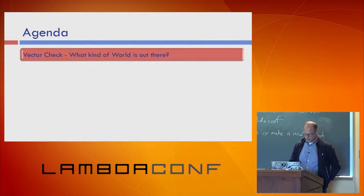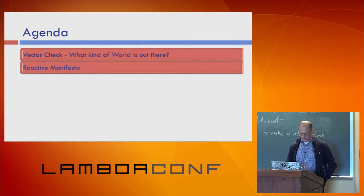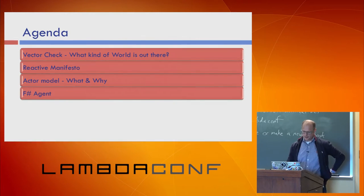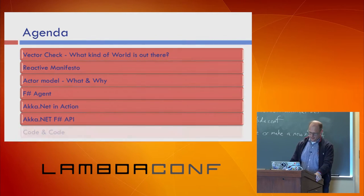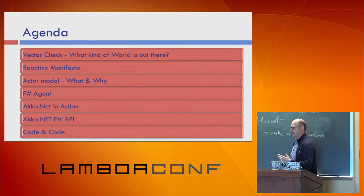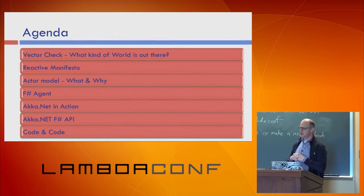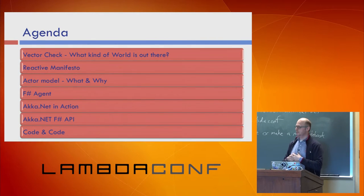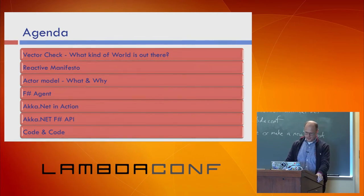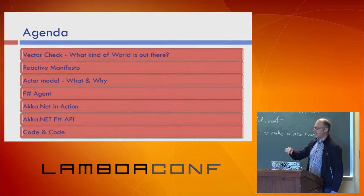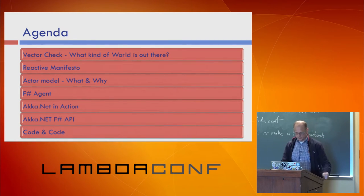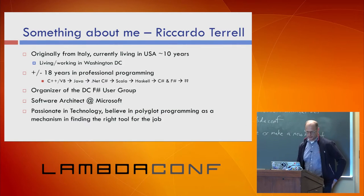The agenda: I'll go through what's going on in the world, briefly about the Reactive Manifesto, and discuss what it is and why we should care about the actor model. Since you're familiar with F#, I'll discuss the F# agent or mailbox processor - just two minutes to introduce the difference between agent and actor. Then we'll look at Akka.NET and the F# API with lots of code samples. All slides and code material are already on GitHub, and I'll provide the link at the end.